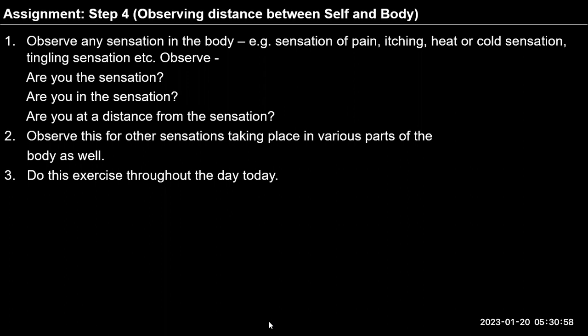Just to briefly recap the steps in Exercise 2. In Step 1, we were trying to observe these two realities: the self — a unit of consciousness — and the body — a material unit. We were trying to observe these two as distinct entities. We can see that I am there as a reality, I exist, because I can see the activities that are going on within me.